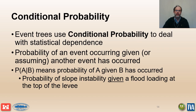A risk analysis uses conditional probability estimates to deal with statistical dependence. A conditional probability is the probability that an event will occur given that some other event has occurred or is assumed to have occurred. The notation P of A followed by the vertical bar symbol and B means the probability estimate for event A occurring given that event B has already occurred.